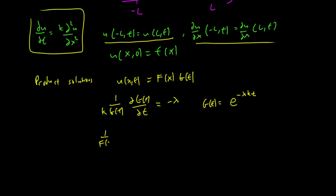We have this time 1 over f(x) times partial of f(x) partial x squared equals minus lambda once more, but with different boundary conditions this time.